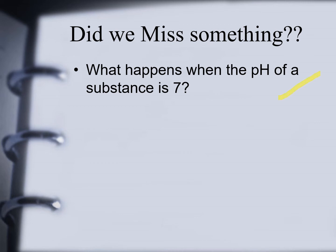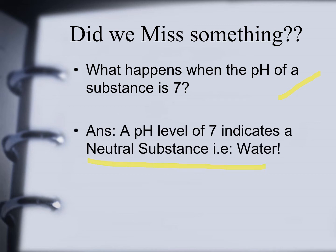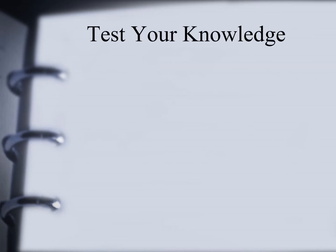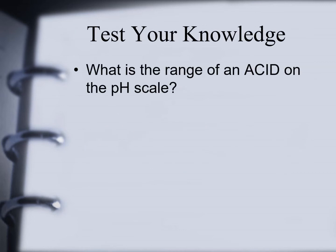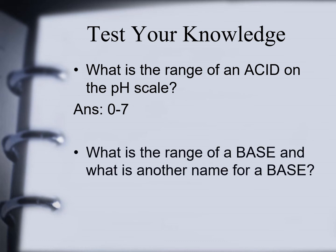What happens when the pH of a substance is 7? A pH level of 7 indicates a neutral substance — the best example is water. Test your knowledge: what is the range of an acid on the pH scale? The answer is 0 to 6. What is the range of a base and what is another name for a base? The answer is 8 to 14, and the other name for base is alkaline.